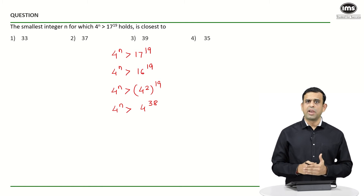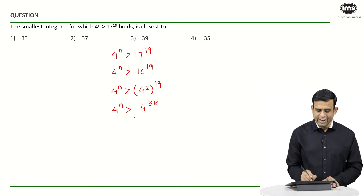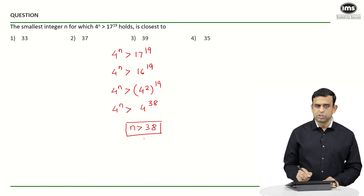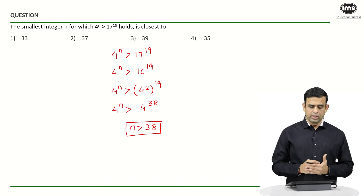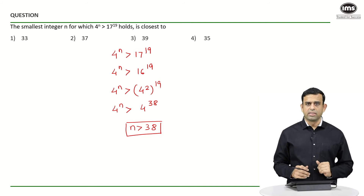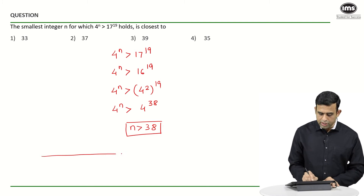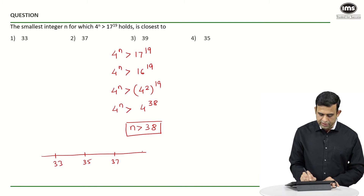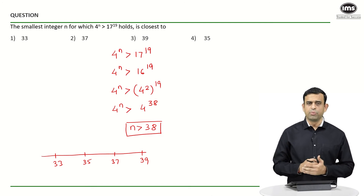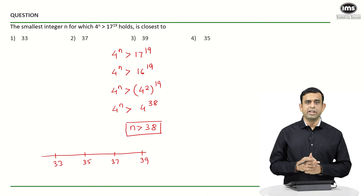So we can be sure that the value of n has to be more than 38. We don't know the exact value of n for which 4^n will be more than 17^19, but the question asks for the smallest integer closest to that value. The options are 33, 35, 37, and 39.